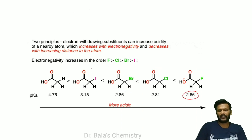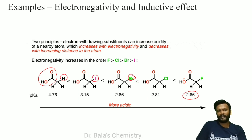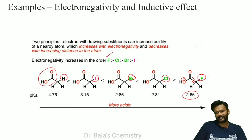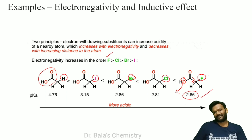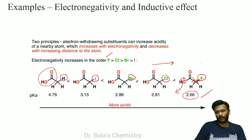Now for halogens: iodine, bromine, chlorine, fluorine. Who is most electronegative? Fluorine is highly electronegative — the strongest electron withdrawer. The more electronegative the atom, the more the oxygen density is affected, and therefore the more acidic the compound becomes. So acidity character follows fluorine being the most acidic substituent.